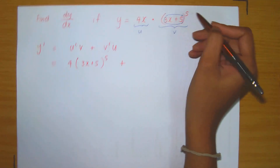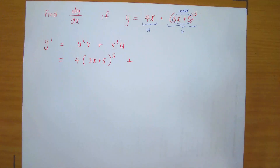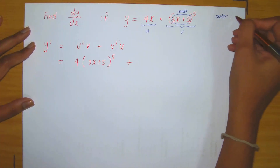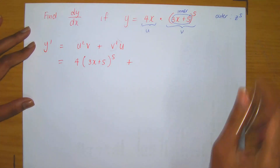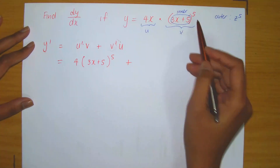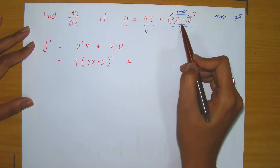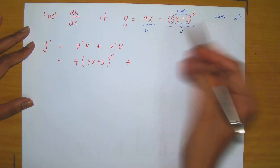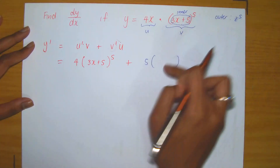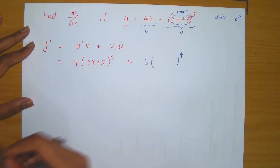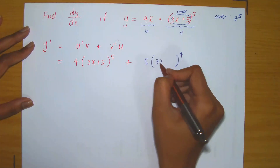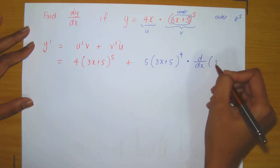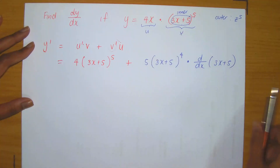For v prime, there is an inner function — 3x + 5 — and an outer function — the bracket raised to the power 5, which you could view as z to the power 5. Using the chain rule: derivative of the outer evaluated at the inner, multiplied by the derivative of the inner. That gives 5 times (3x + 5) to the power 4, multiplied by the derivative of the inner function. We compute that derivative in the next step.